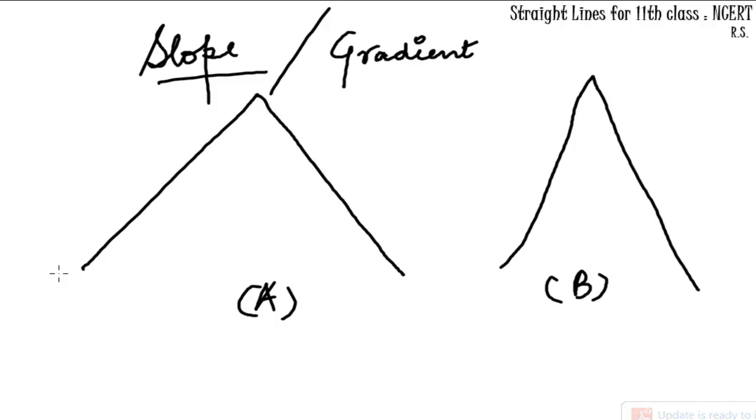What is slope or gradient? It is also known as gradient. Slope, as we call it in language, refers to the steepness of a hill or path - how steep it is, how much slope there is.